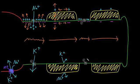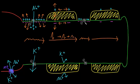Myelinated axons have most of their voltage-gated ion channels at the nodes of Ranvier. So while an action potential is conducted faster through a myelinated segment, it actually does decrease in size a little bit as it's going along. The nodes of Ranvier are therefore necessary to regenerate the full size of the action potential so that it can continue all the way down the axon.